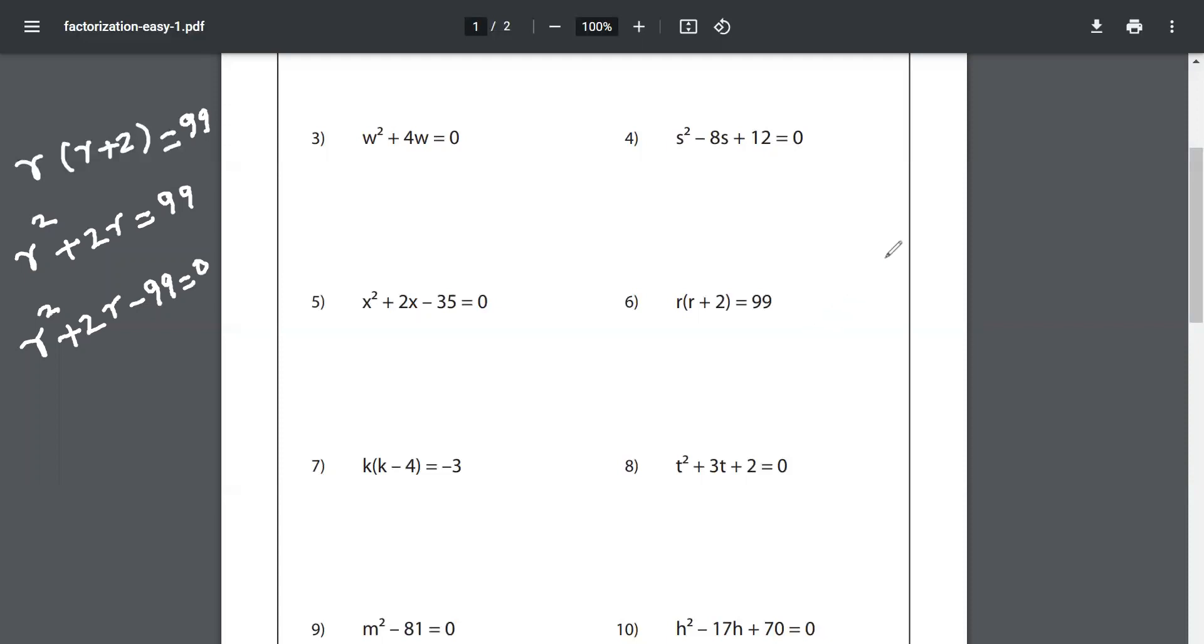So my product should give me -99 and my sum should give me only 2. Let me take the numbers: first, 1 × 99 is 99, but 99 + 1 is 100. No, it doesn't help me. Two doesn't go. Three, okay, 3 × 33 is 99, very good, but 33 + 3 is 36, not the answer.